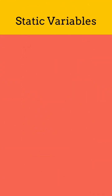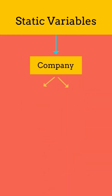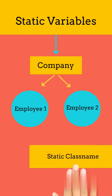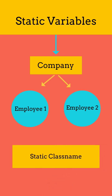Static variables solve this problem. If we define a variable as static, then this variable will belong to the class, not to the employee objects. So memory will be allocated only one time — i.e., at the time of class loading — and all other objects will refer to the same memory location.